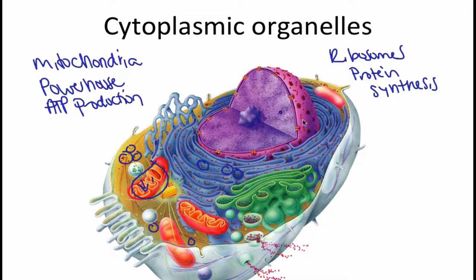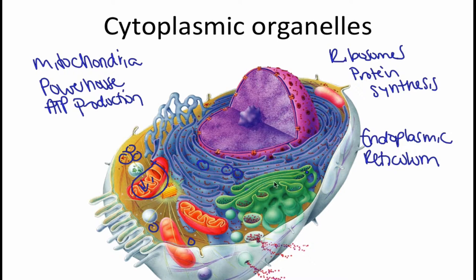So let's go ahead and talk about the endoplasmic reticulum. There are two types of endoplasmic reticulum: you have the rough ER, which is studded with ribosomes, and then there's the smooth ER, which is not studded with ribosomes.